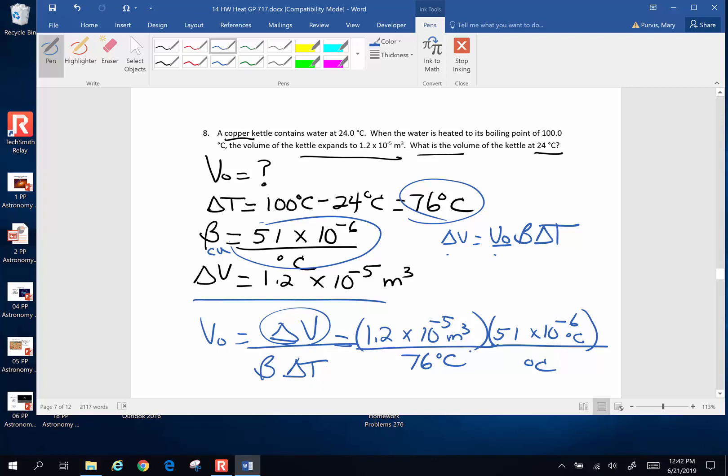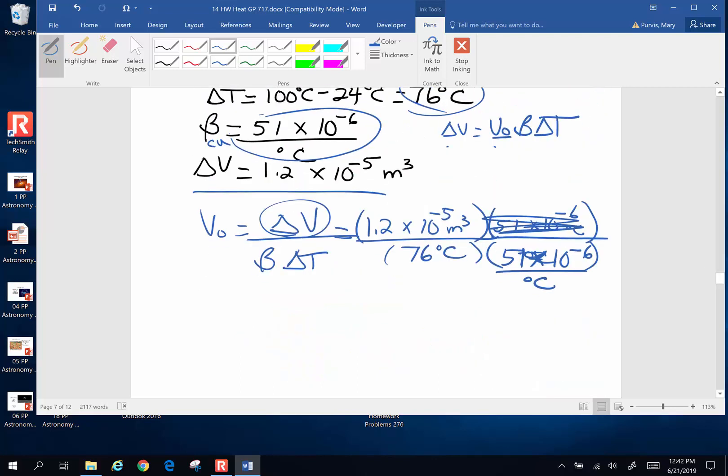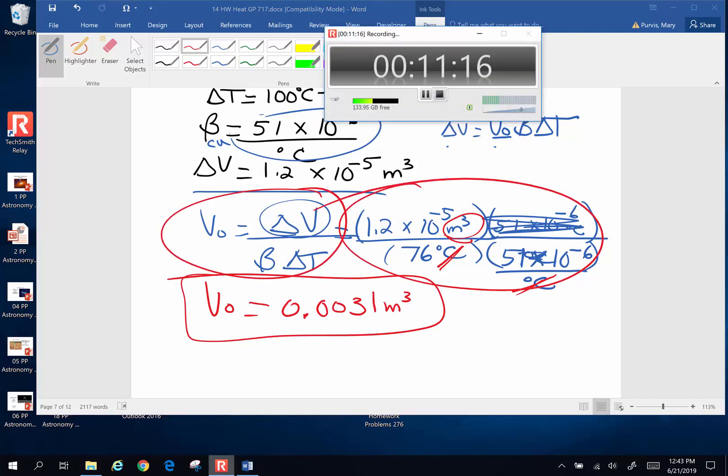This should be on the bottom, shouldn't it? I could hear you yelling at me, Mary, you did it wrong. This is a classic example. If the units don't work, it's telling you that you did something goofy with your numbers. I wasn't ending up with volume units. I had to have the degree Celsius cancel. Meanwhile, back at the ranch, 1.2 to the negative fifth divided by 76 divided by 51 times 10 to the negative sixth. 0.0031 meters cubed. Alleluia. Algebra was right. I just couldn't copy it. I think we better stop and keep going later. See you then.